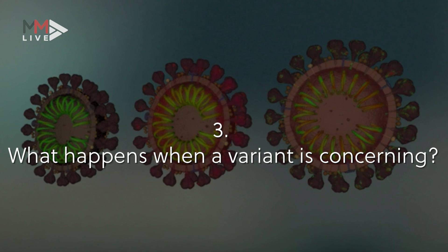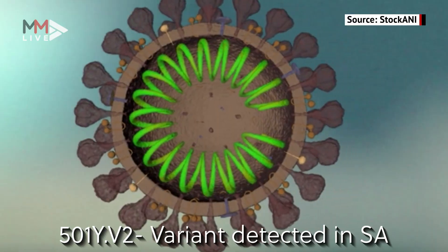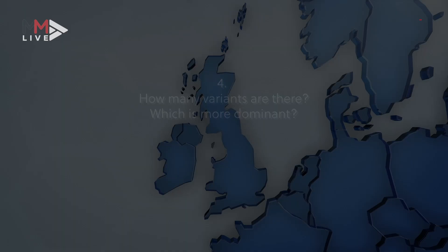On occasion, there is a change that occurs in the virus that gives it an advantage. And the virus then exploits that advantage and it can become a dominant virus, as we have seen in the 501Y.V2 variant.